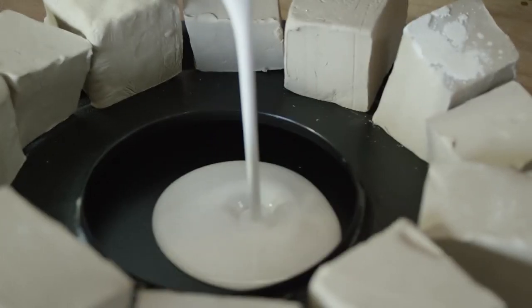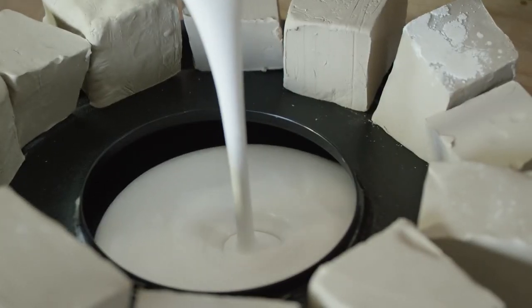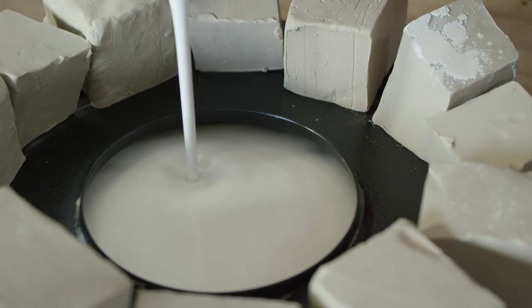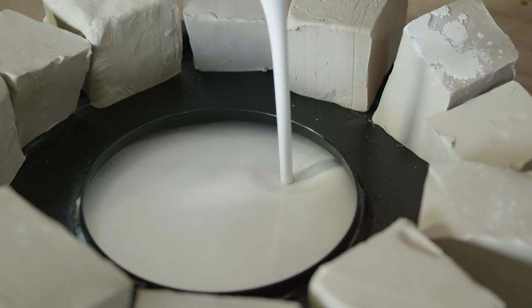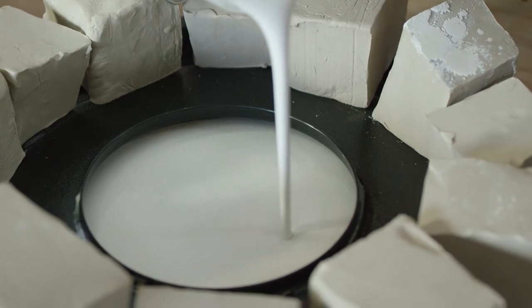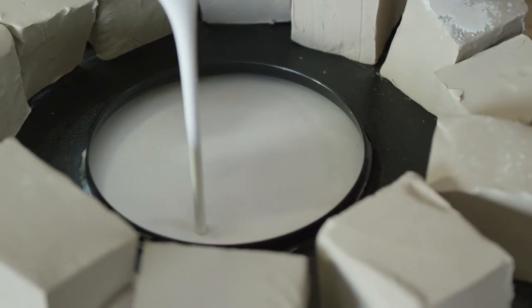You want to move where the plaster is pouring into the mold because otherwise you'll create a hard spot that won't absorb water, so you want to be constantly moving the stream of plaster around the base of the mold.